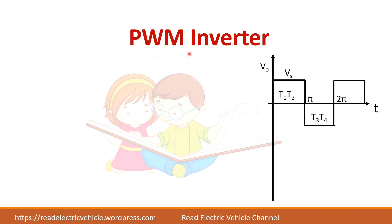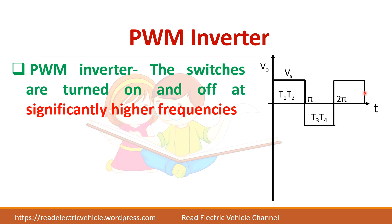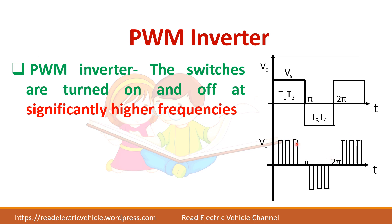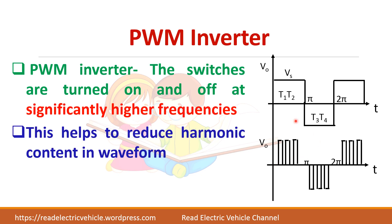Let us see what a PWM inverter is. The output of a square wave inverter shows constant conduction, but in a PWM inverter the switches are turned on and off at very high frequency. The period where the device is off and the period where it is on alternate at high frequency. This is done so that the harmonic content in the output waveform is reduced.